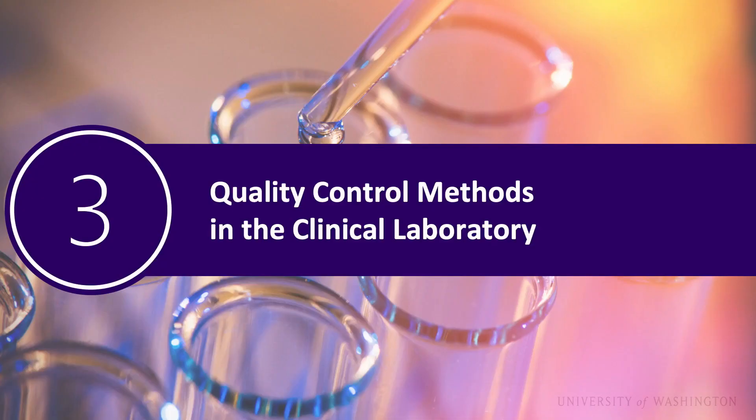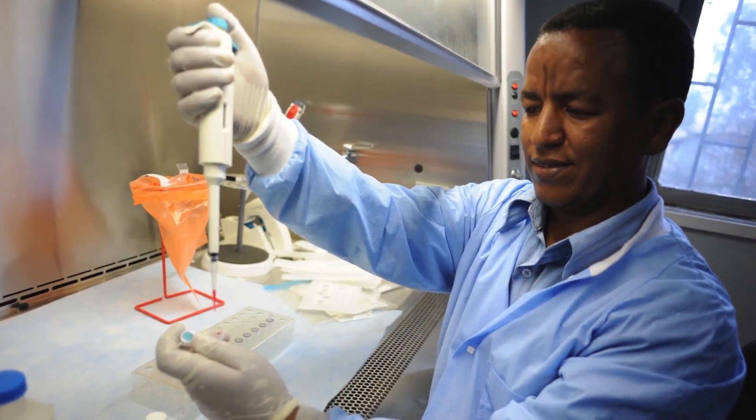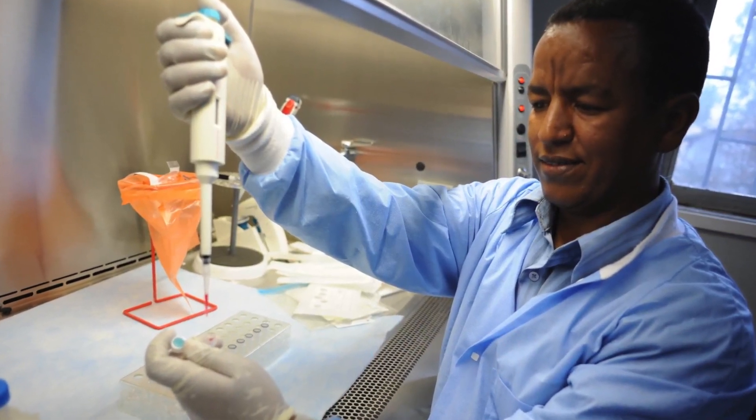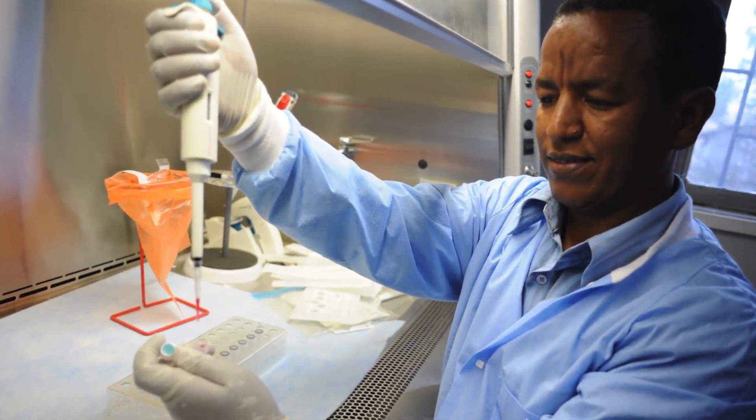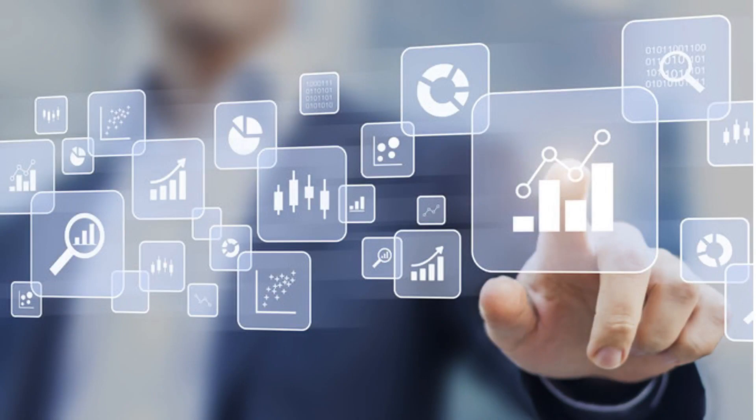Course three, Quality Control Methods in the Clinical Laboratory, focuses on improving quality and laboratory practices through systems thinking and process improvement. Implementing a systems thinking approach into your laboratory allows you to see the whole and is a key to process improvements.